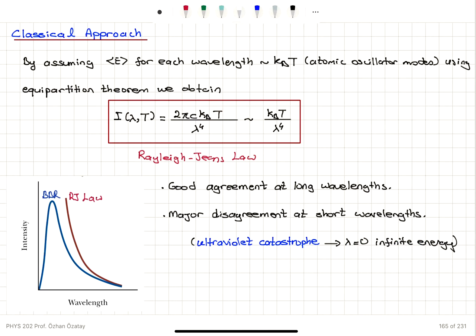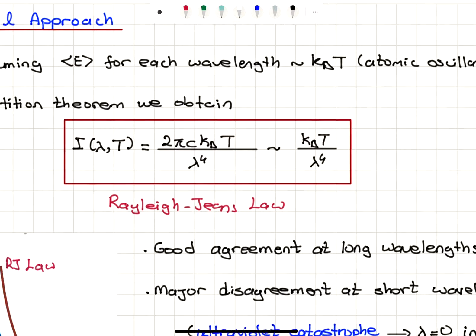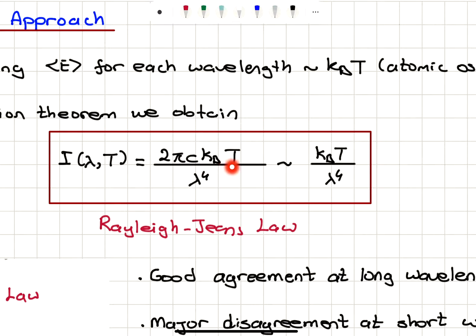Using the classical approach, we outline the explanation by assuming an average energy for each wavelength proportional to kT, because we have atomic oscillator modes and each quadratic term in the energy gives half kT. So one-half kx squared plus one-half mv squared is the total energy of a harmonic oscillator; they each contribute kT over 2, giving a total kT contribution. Using the equipartition theorem, this gives us an intensity distribution of 2πc·kT divided by lambda to the fourth power — basically a constant times kT over lambda to the fourth power. That's the classical dependence on wavelength, known as Rayleigh-Jeans law.